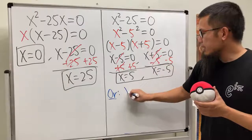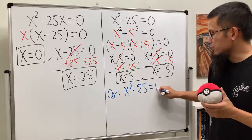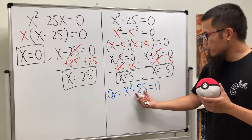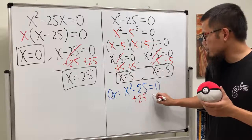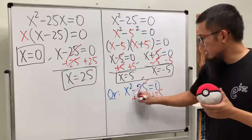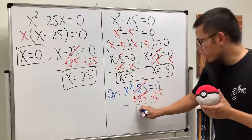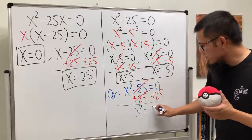Here we have x squared minus 25. That's equal to 0. So we have a perfect square right here. We can move the number to the right-hand side first by adding the 25 on both sides. So that is, and now we'll cancel. And we will just get x squared on the left-hand side. That's equal to positive 25.